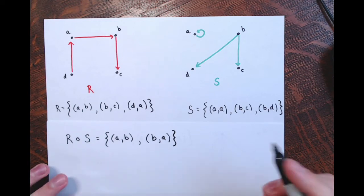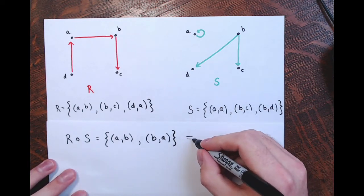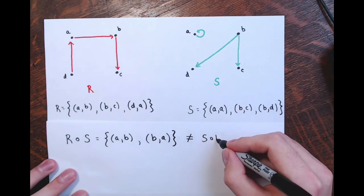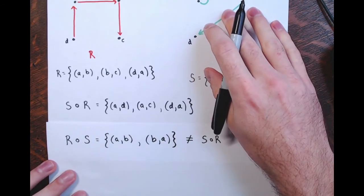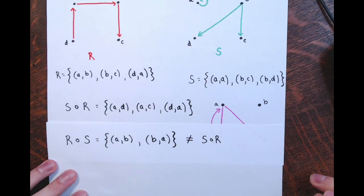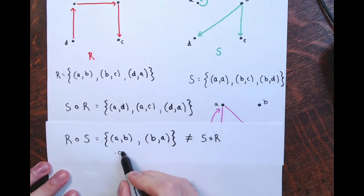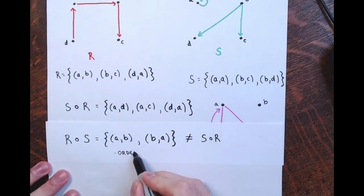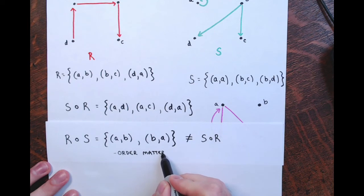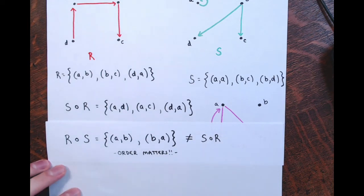You can see that R∘S is not the same as S∘R — S∘R had those three ordered pairs, totally different elements, totally different ordered pairs. That's going to happen in general: the order matters when you compose, just like with functions.